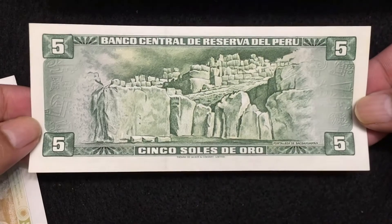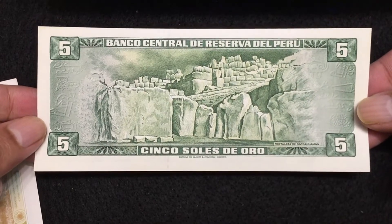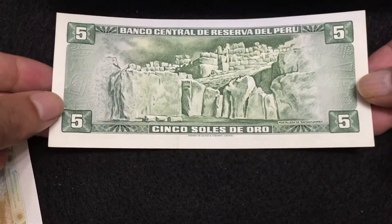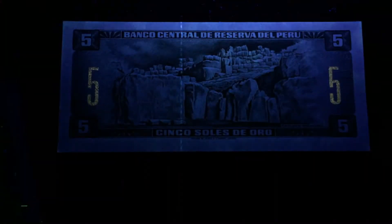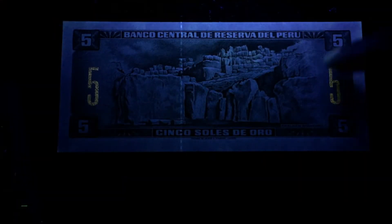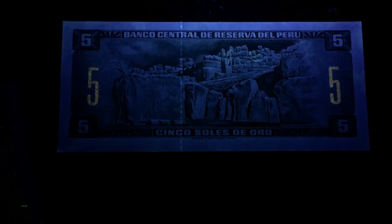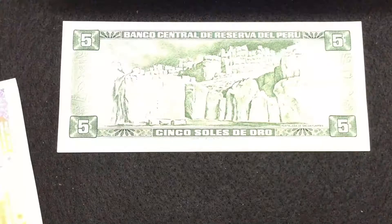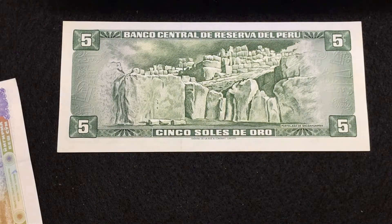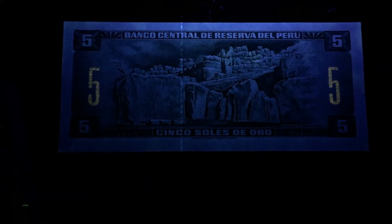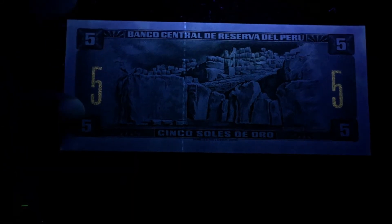Let's check the reverse side of Peru 5 Soles under the UV light. Number 5 on the right is getting reflected, number 5 on the left is getting reflected. This is a very old bill but still the number 5 is getting reflected under UV light — so that's a good security marking. There's also a silver lining that is getting reflected.